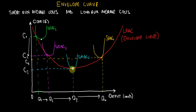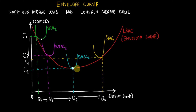There is one point where the company minimizes the average cost of production — reaching the lowest possible average cost — which is the tangent point between the short run average cost and the long run average cost. This is the minimum of both the short run average cost curve and the long run average cost curve. I hope this all makes sense. I appreciate you all watching. If you like the video, please make sure to subscribe.